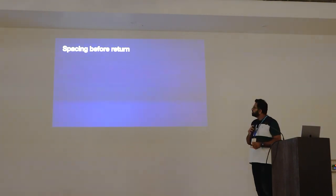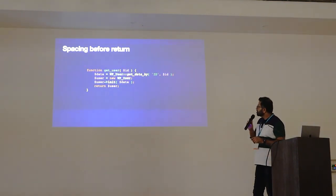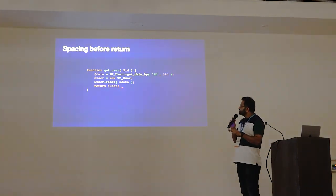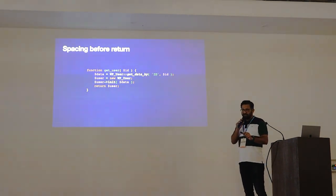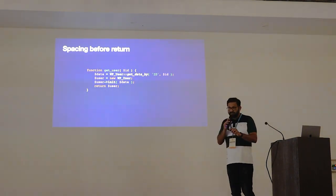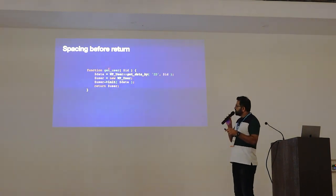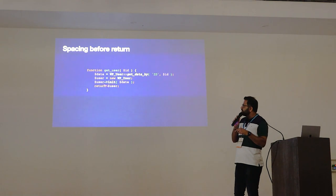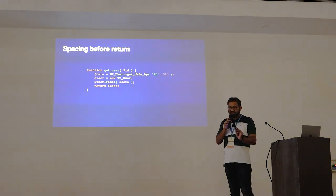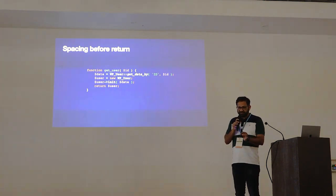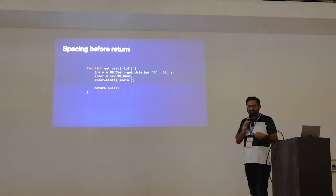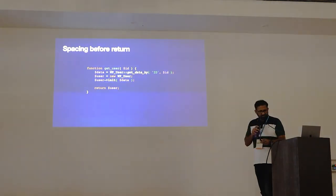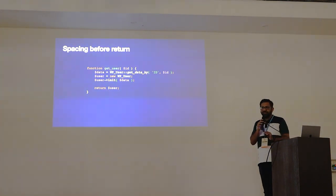Next, to make your code appear better — here is a very simple function where we are fetching some data from the database and returning that user. If you are just glancing at this code in a big function with 10–15 lines, it is very hard to understand whether the function is returning something, because the return statement gets lost in all the code. Just adding one empty line before your return statement makes it stand out — now you can quickly see what your function is returning. Always add one empty line before your return statements.